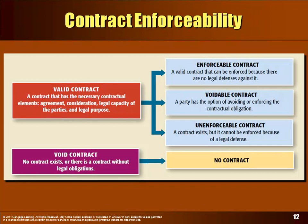An enforceable contract is a valid contract taken a step further — one that can be enforced in court with no legal defense against it. An unenforceable contract is one that can't be enforced even though it is a contract, because somebody has a valid legal defense to it. A void contract is no real contract at all.